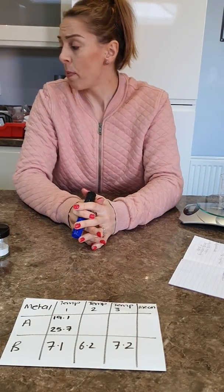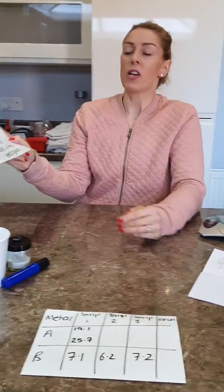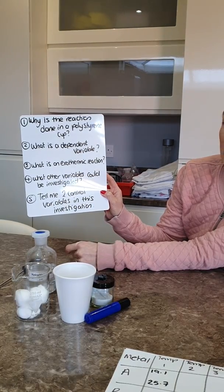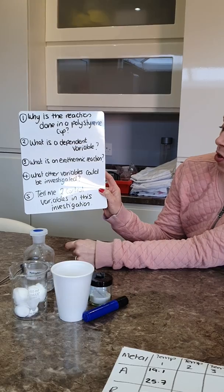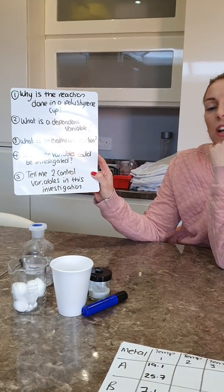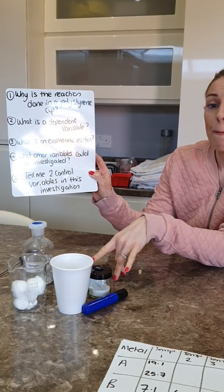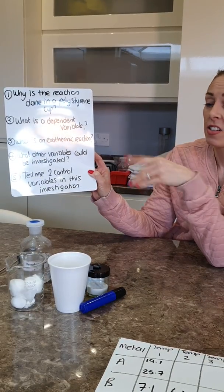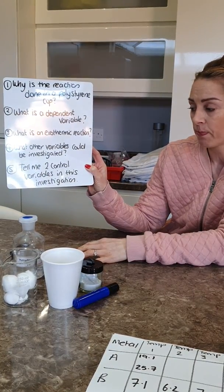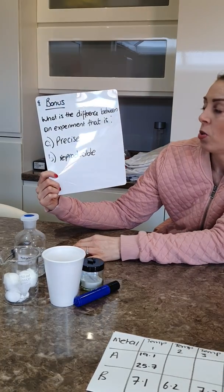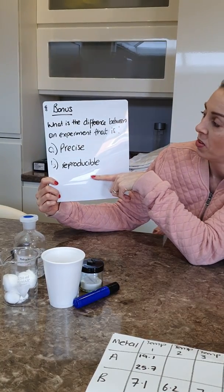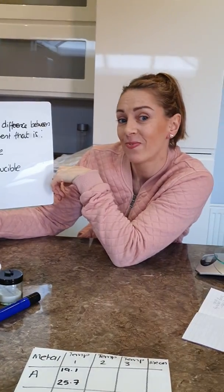That covers investigating temperature changes in reactions. Here are five questions: one — why is the reaction done in a polystyrene cup? Two — what is a dependent variable? Three — what is an exothermic reaction? Four — what other variables could you investigate? Five — tell me two control variables in this investigation. Bonus question: what's the difference between results that are precise and results that are reproducible?